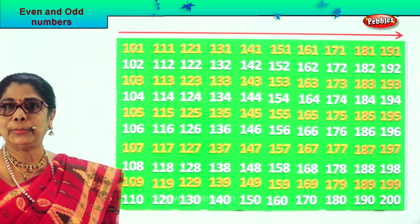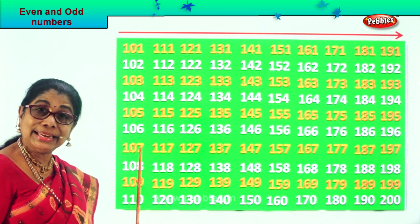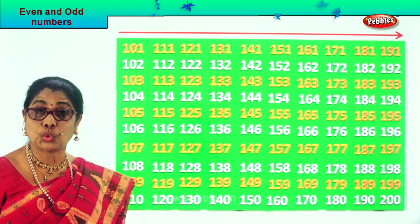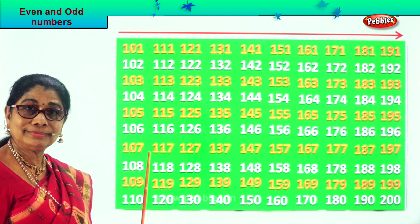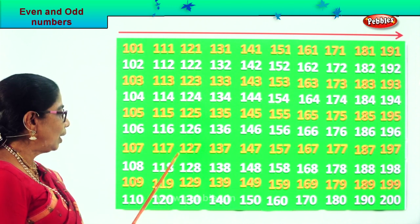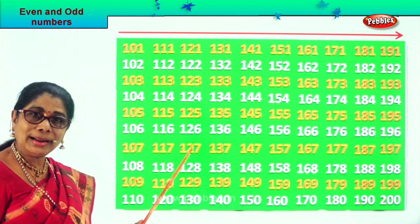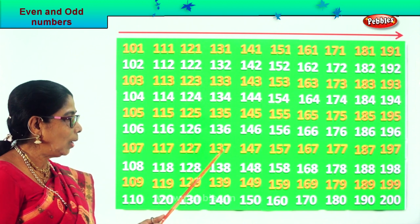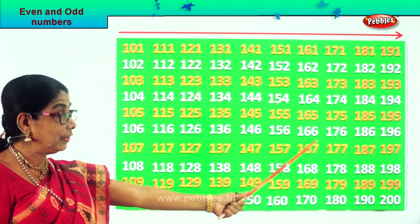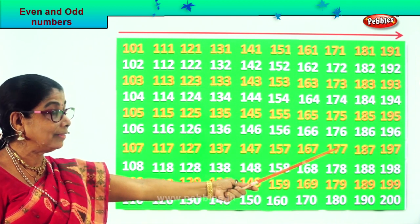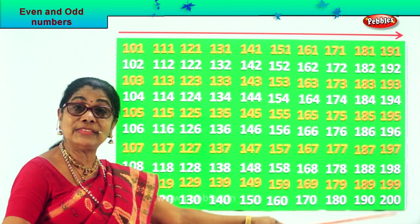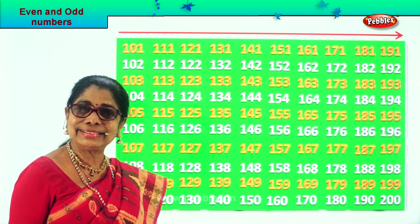Look at the next set of odd numbers — all numbers ending in 7: 7, 17, 27, 37 and so on. Here from hundreds, all numbers ending in 7: 107, 117, 127, 137, 147, 157, 167, 177, 187, 197. All odd numbers.